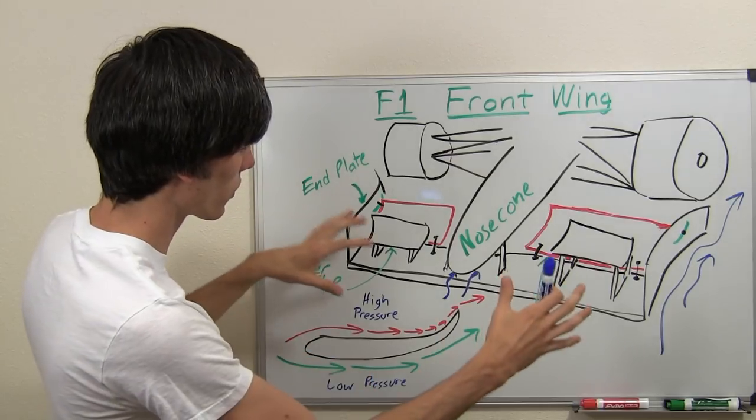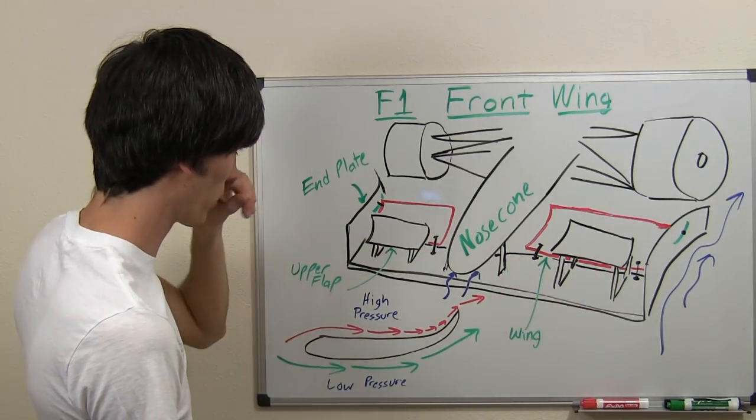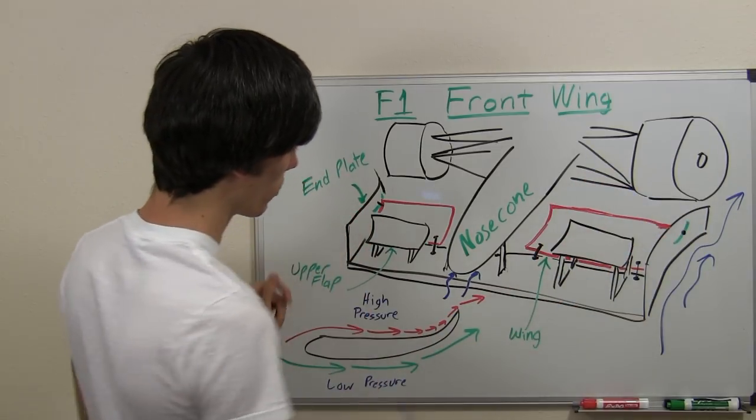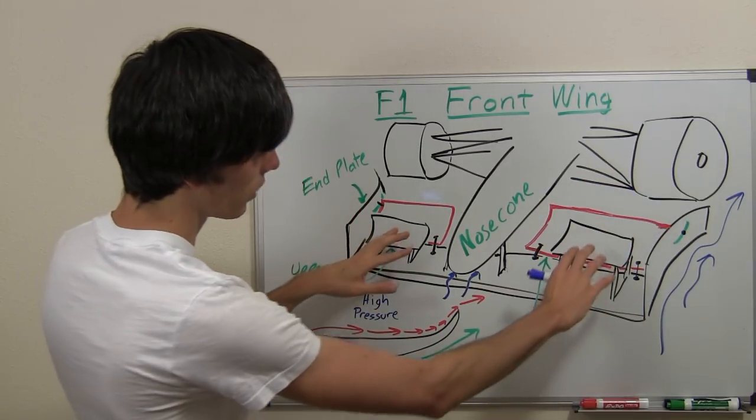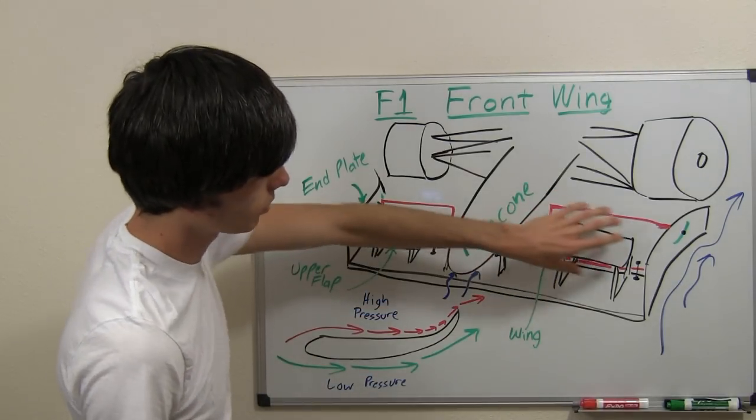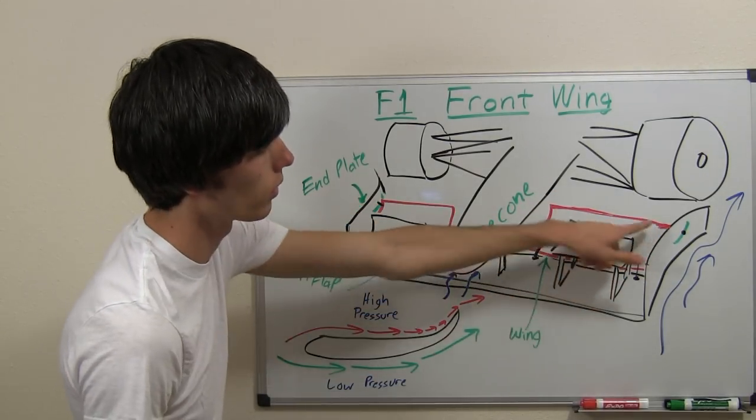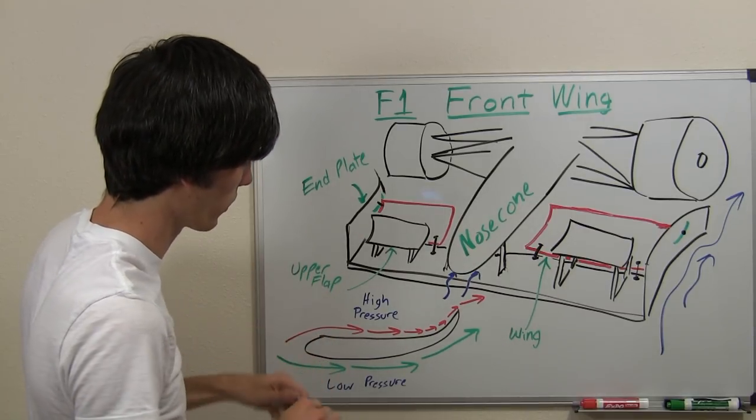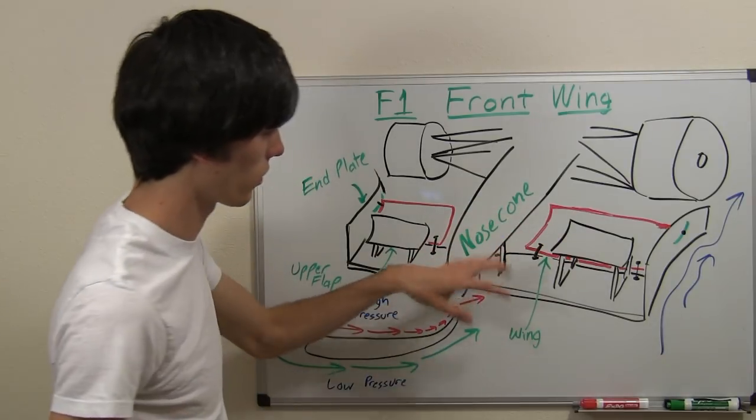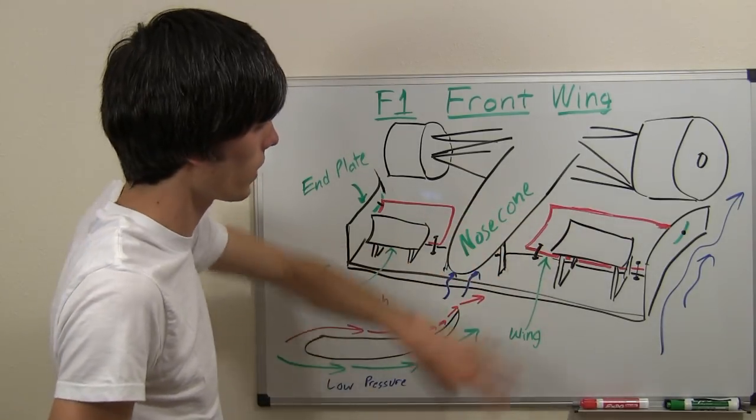First I'll go over a few of the components involved. We've got end plates - the vertical plates on the side of the wing. We've got upper flaps, little flaps that are raised up from the wing. We've got adjustable wings, drawn here in red, which can be adjusted for different downforces. And then we've got the nose cone in the front, which is what it's all attaching to.